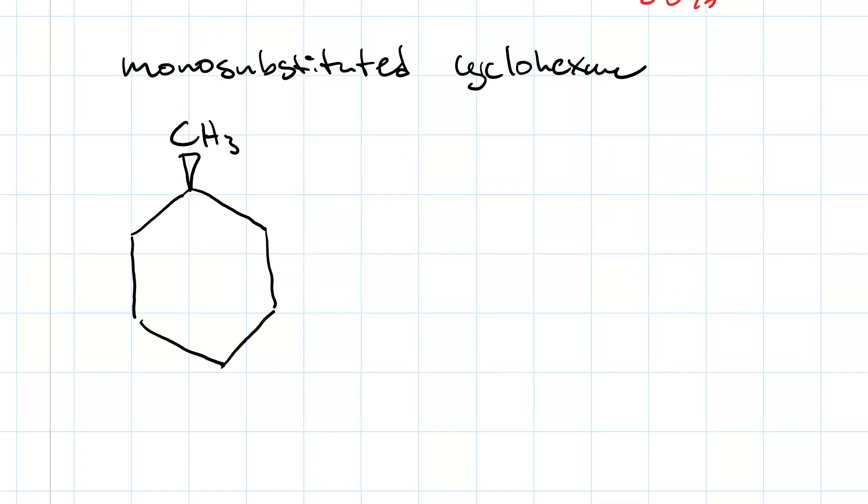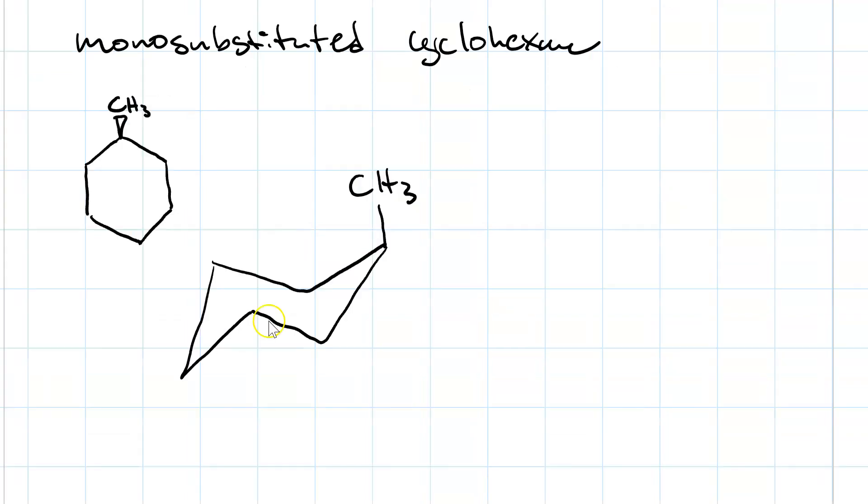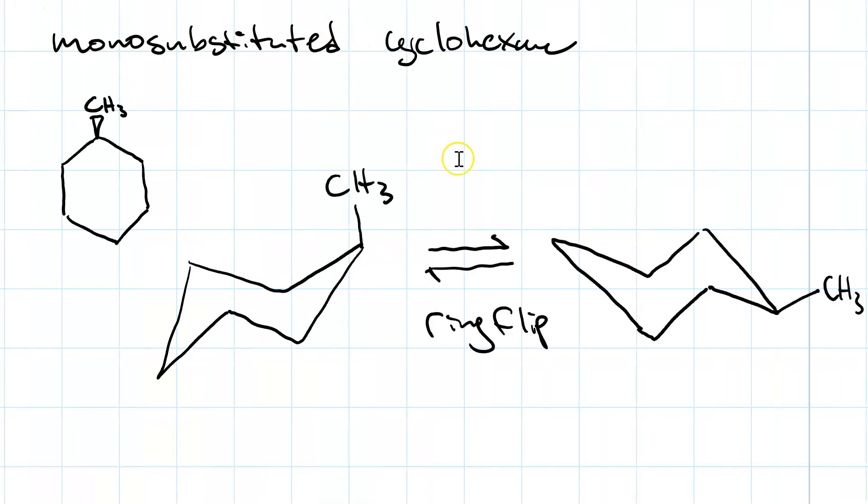With monosubstituted cyclohexane, now there's a significant difference in the stability of our two chairs. In one chair conformation, the methyl group will occupy an axial position, and in the other chair, our substituent is in the equatorial position.